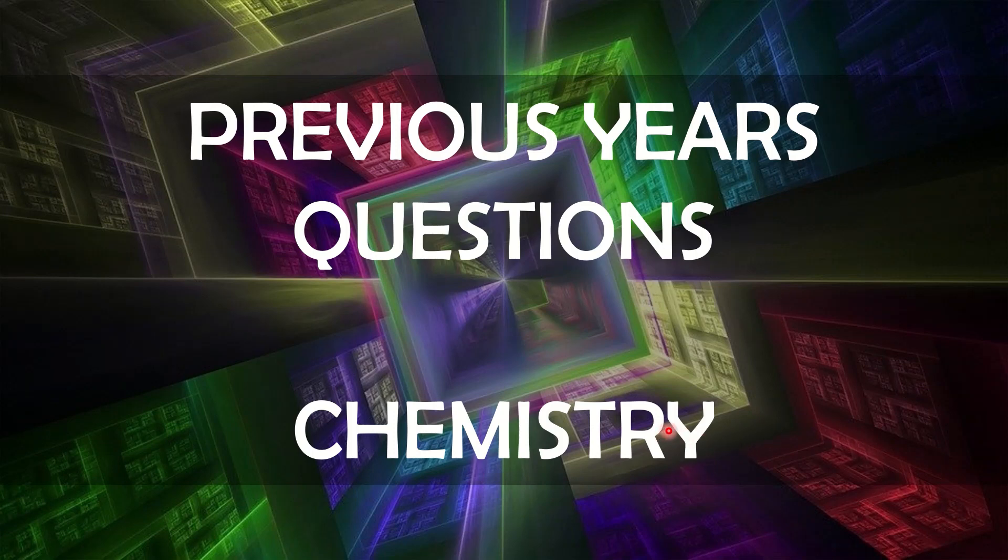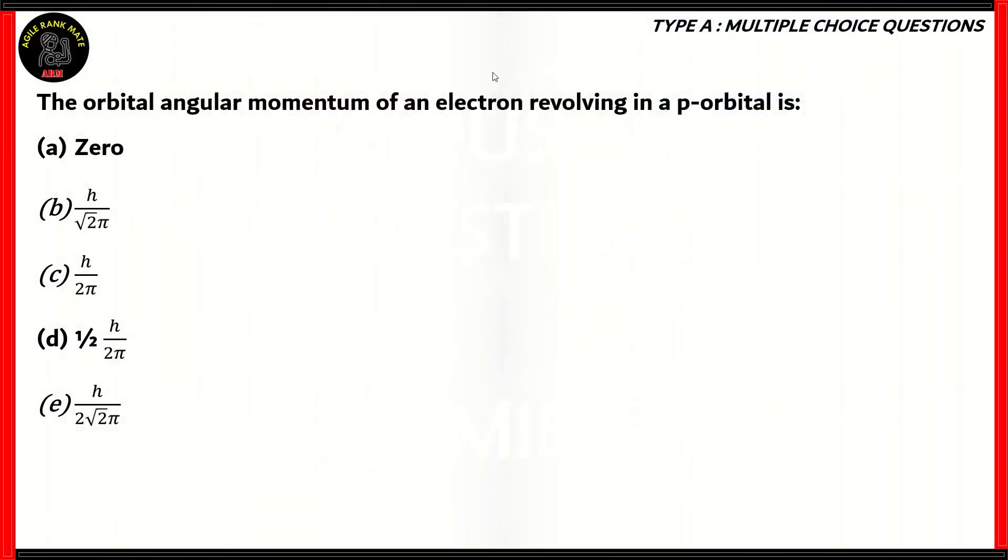Let's start off with our first question. The orbital angular momentum of an electron revolving in the p-orbital is: a) 0, b) h by root 2 pi, c) h by 2 pi, d) half h by 2 pi, e) h by 2 root 2 pi.